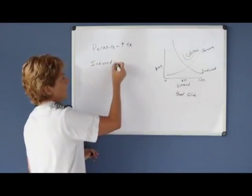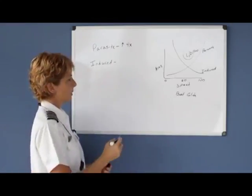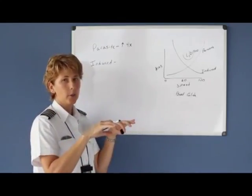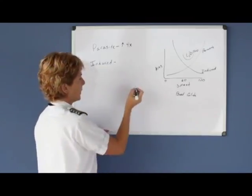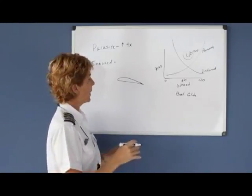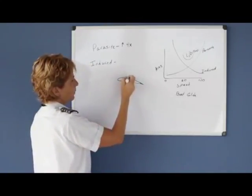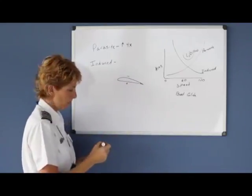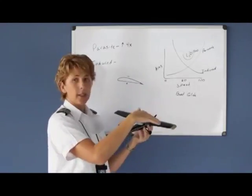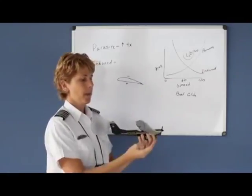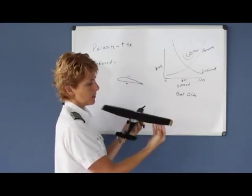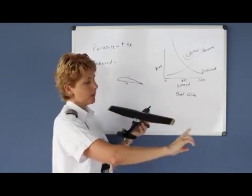Induced drag is a somewhat difficult concept, but it has to do with the positive air pressure underneath the wing wanting to meet the negative air pressure above the wing to equalize itself. Everything in the world strives to become more uniform or equalized. When flying straight and level, the positive pressure beneath the wing wants to reach the negative pressure above. It can't go in front of the wing because we're moving forward, and it can't easily go behind, so that positive air slips off the wing tip and comes back around.